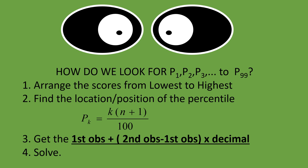Once you apply the formula to find the location of the percentile, if the result is an exact whole number — meaning no decimal — you simply count to that position in the ordered data. But if a decimal number comes out, you need to interpolate. For Step 3 (interpolation), you take the first observation and add the product of the decimal part and the difference between the second and first observations. Then Step 4 is to solve.